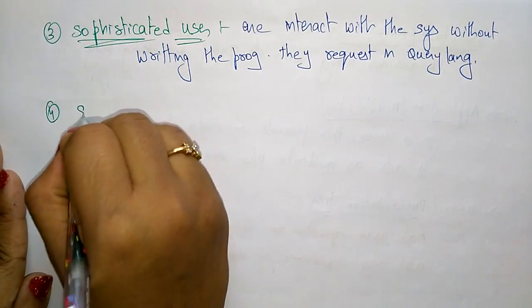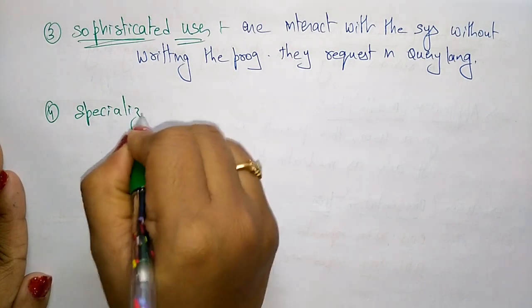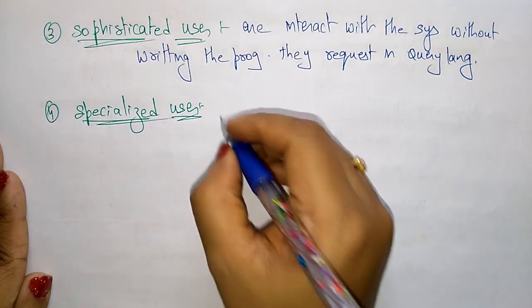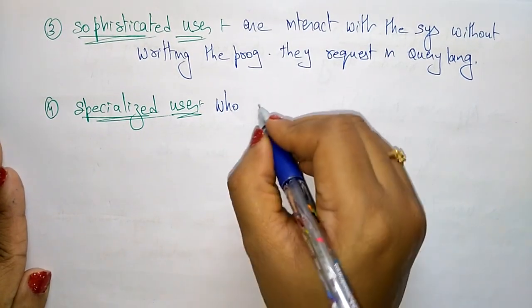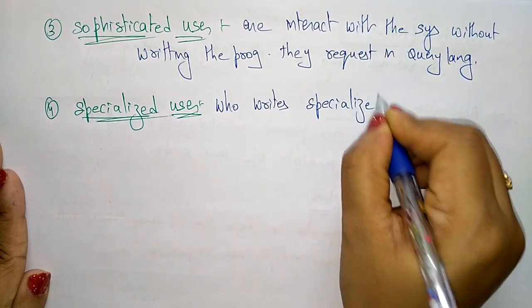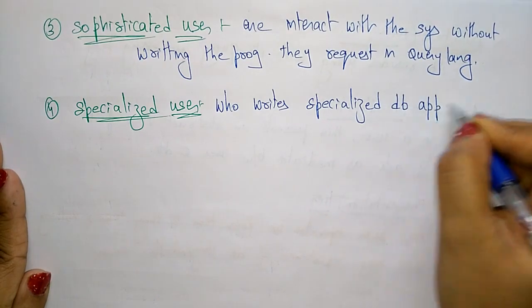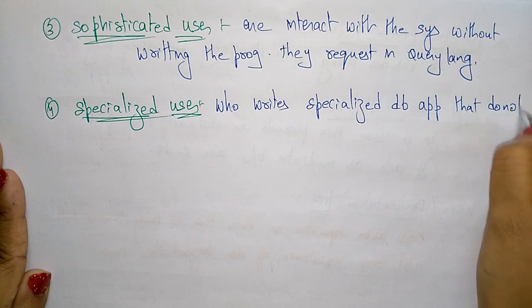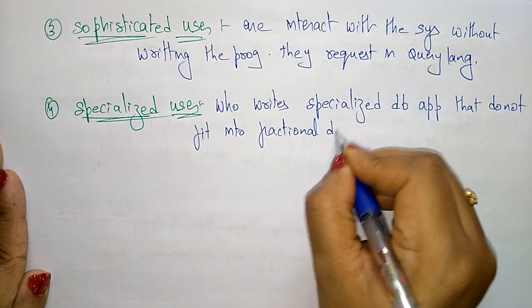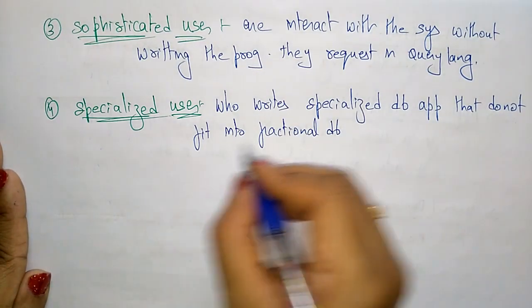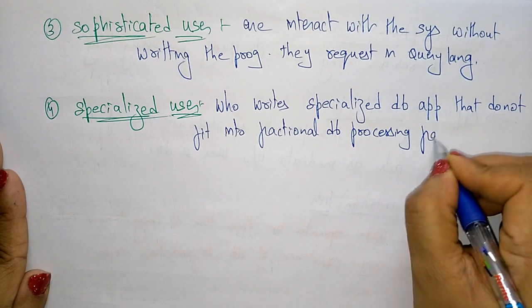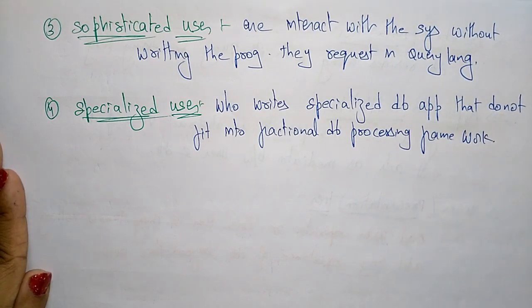The fourth one is the specialized user. A specialized user is one who writes specialized database applications that do not fit into the traditional database processing framework. Those you call specialized users.